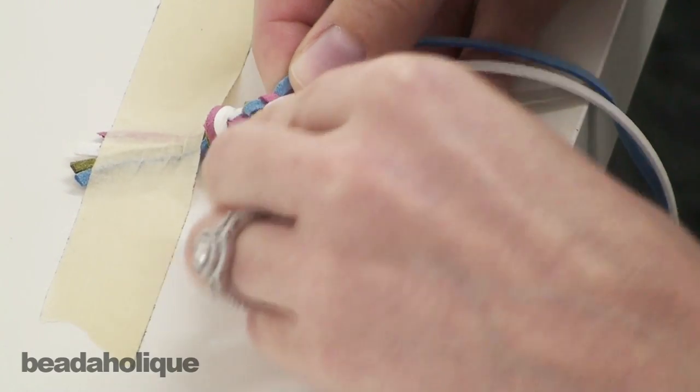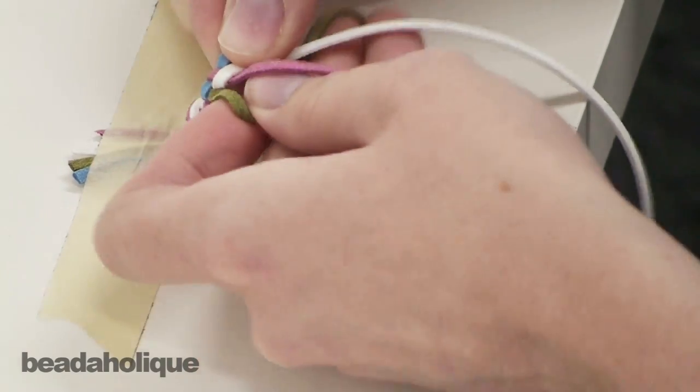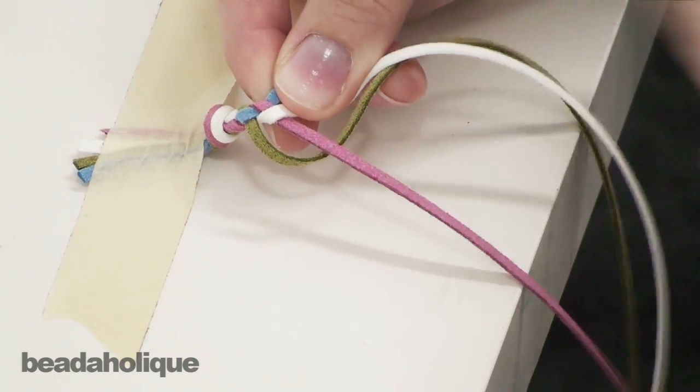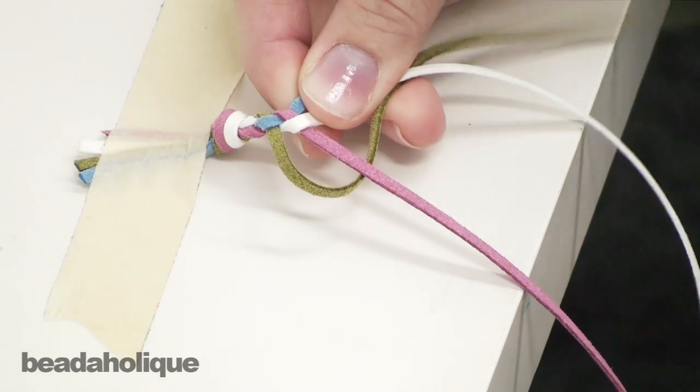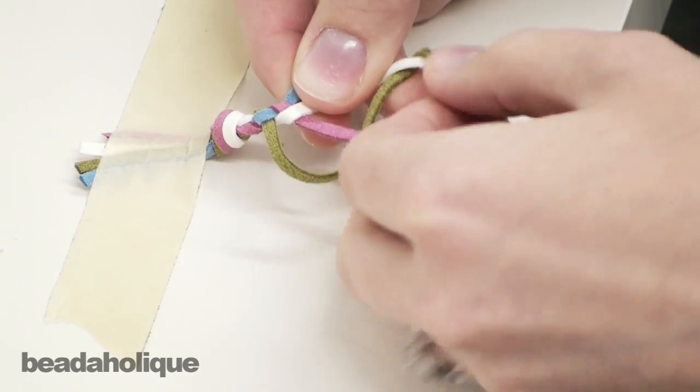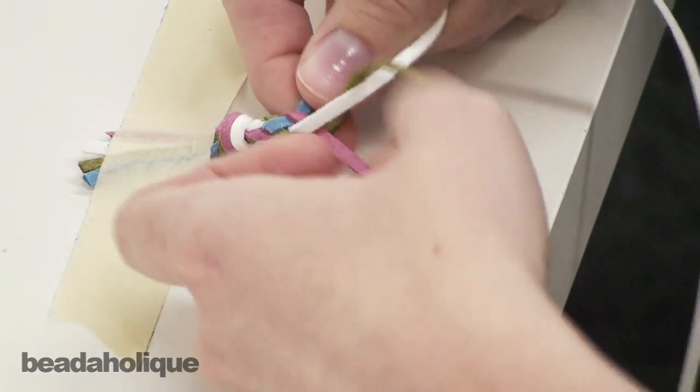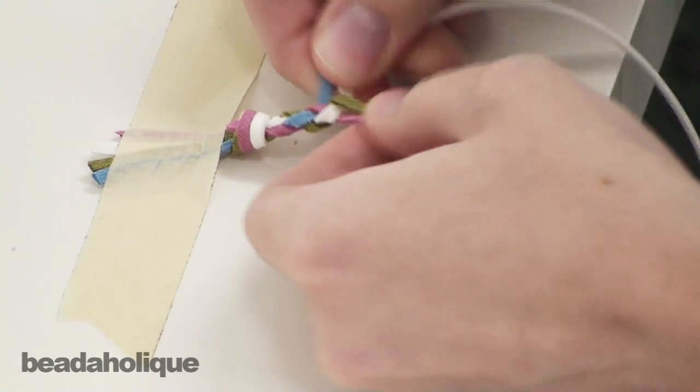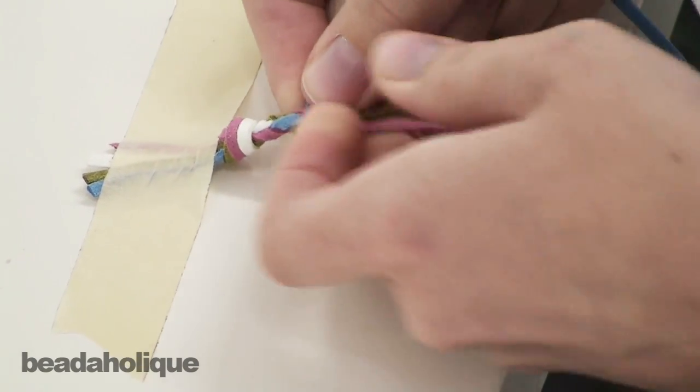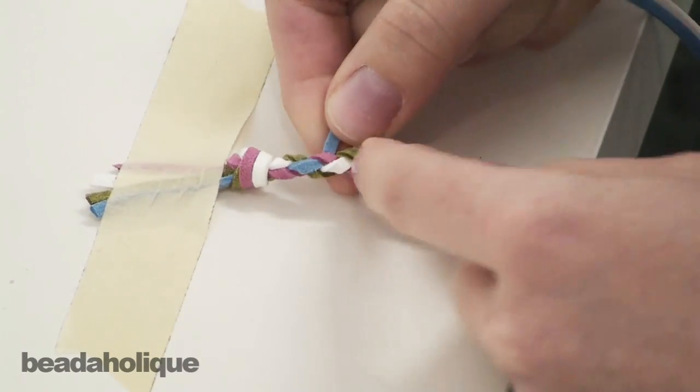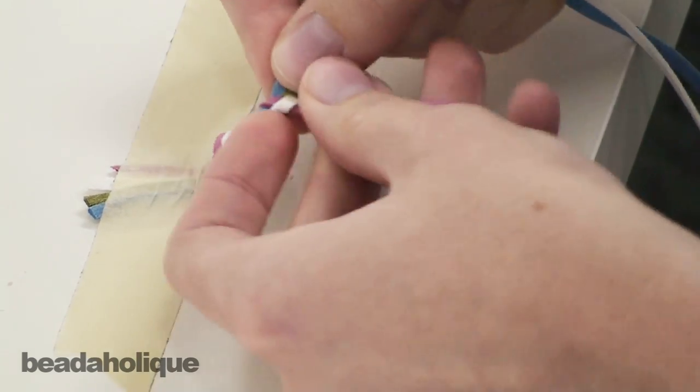Take your leftmost piece, bring it around the middle two and then between them. You can start to see it kind of looking the way that it's supposed to look.